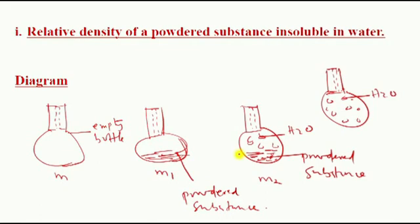Once we have our empty bottle, we measure and take the mass of the bottle. We pour the substance in our bottle and we find the mass of the bottle plus the powdered substance. Next is to add water onto the substance in the bottle. We find the mass there also. Then we take an empty bottle and fill it with water to the brim.